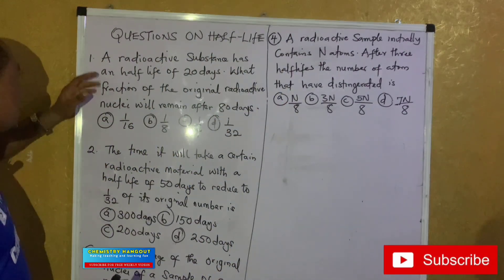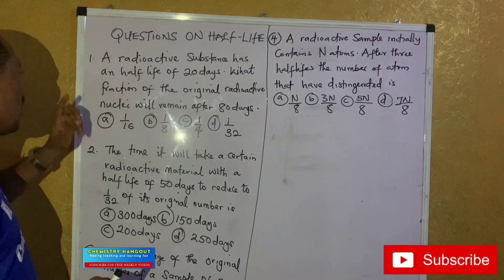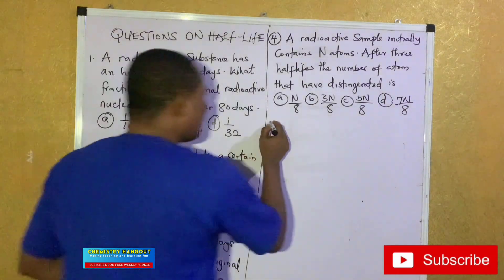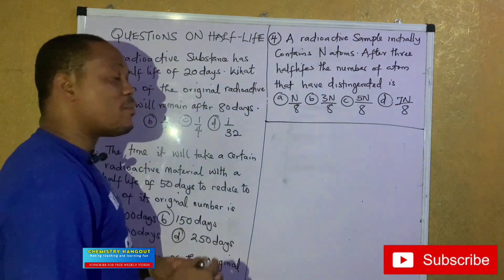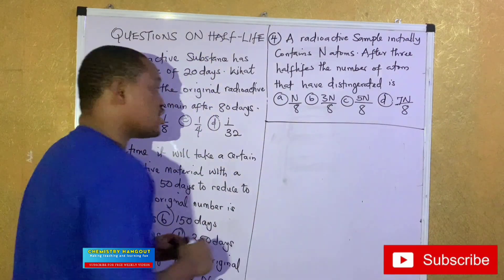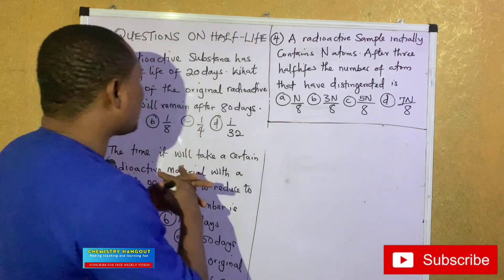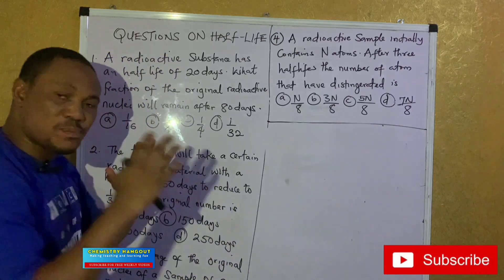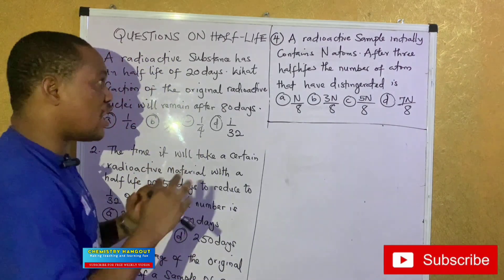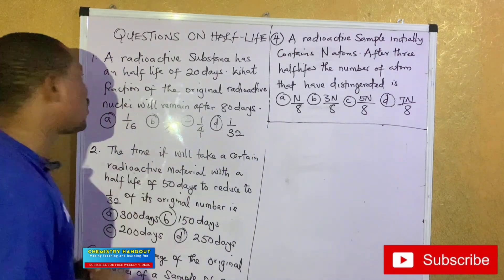The first question says: a radioactive substance has a half-life of 20 days. What fraction of the original radioactive nuclei will remain after 80 days? I gave a lot of formulas in my previous video. If you have not watched that video, please go and watch it. But because this is JAMB and we are time constrained, let's look at the fastest way to solve it.